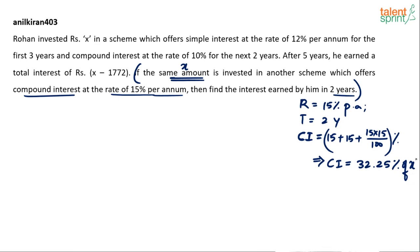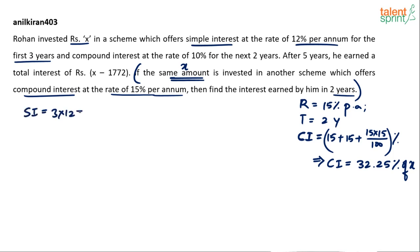So the final answer will be 32.25% of x, and all we need now is to find the value of x from the first part of the question. Rohan invested x in a scheme offering simple interest at 12% per annum for three years — that gives a total simple interest of 36%. You get 12% every year for three years, so 3 times 12 equals 36%.